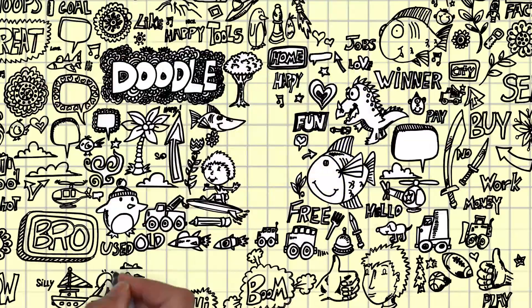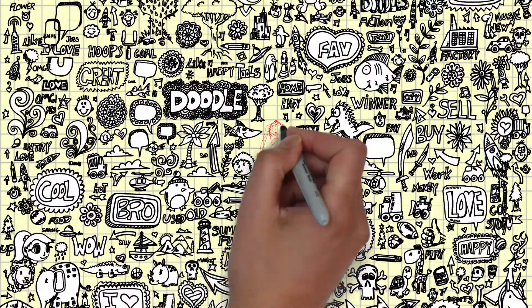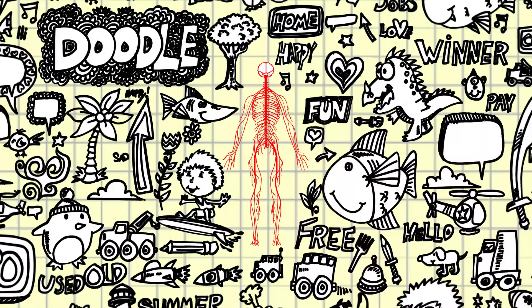As we interact with the world around us, the somatic nervous system is responsible for this ongoing, bi-directional line of communication.